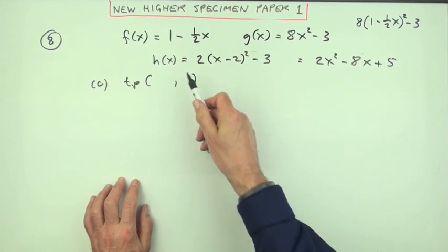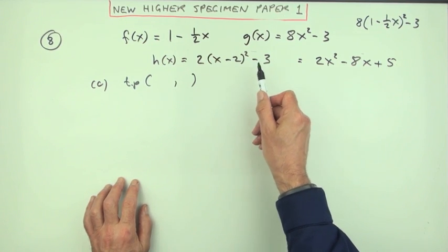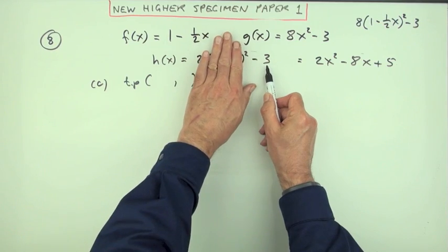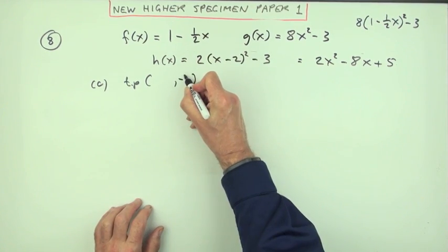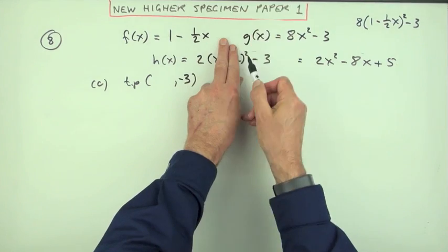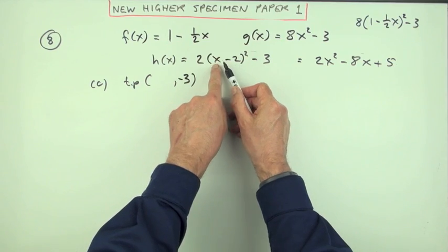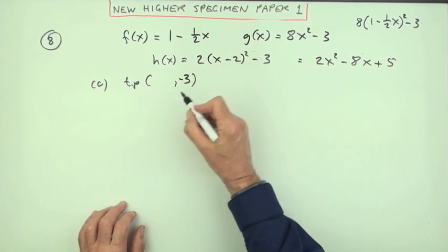will get to -3 when the bracket comes to zero. If you put anything else into this bracket apart from zero, it's going to lift it up because it's a squaring. So when is this bracket equal to zero? When x is the opposite of that, so when x is 2. So there's your turning point.